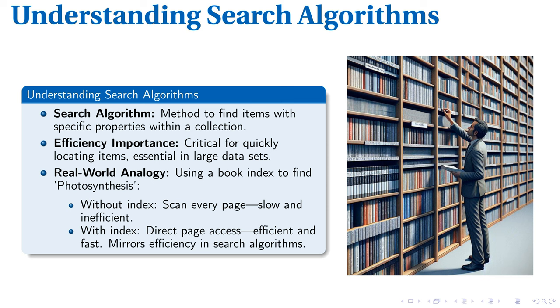Consider this analogy: trying to find photosynthesis in a textbook. Without an index, each page would need examining. This echoes an inefficient search algorithm. Now imagine the book has an index that points directly to photosynthesis. This swift, effective process mimics a search algorithm, showcasing both its purpose and value.